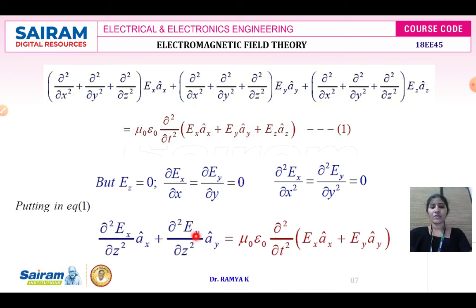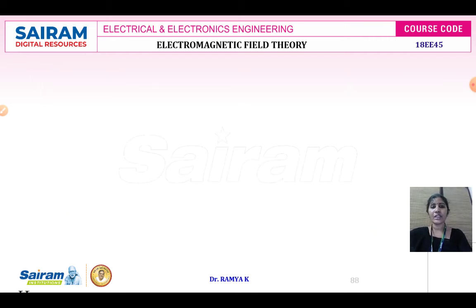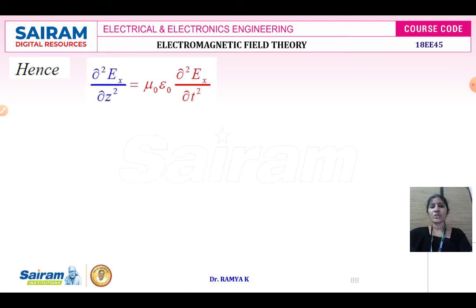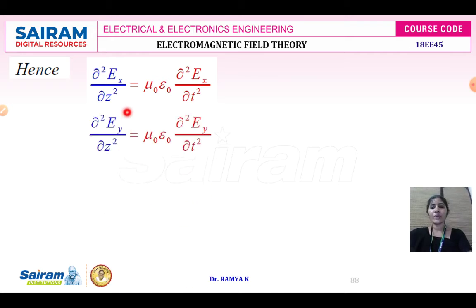Substituting these conditions into the expanded equation, we get: dou squared Ex by dou z squared times ax plus dou squared Ey by dou z squared times ay equals mu epsilon times dou squared divided by dou t squared into Ex ax plus Ey ay. This yields the two wave equations: dou squared Ex by dou z squared equals mu epsilon dou squared Ex by dou t squared, and dou squared Ey by dou z squared equals mu epsilon dou squared Ey by dou t squared.